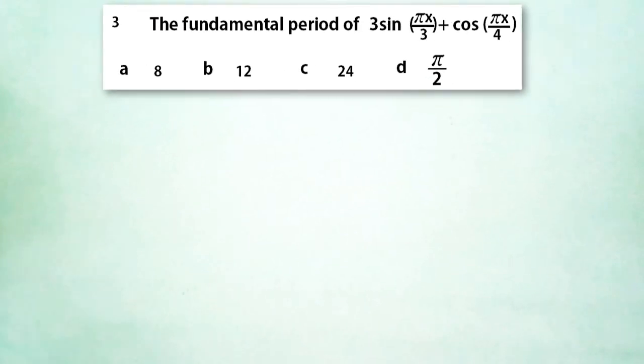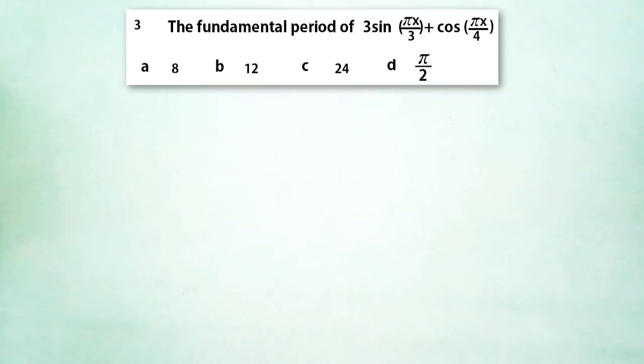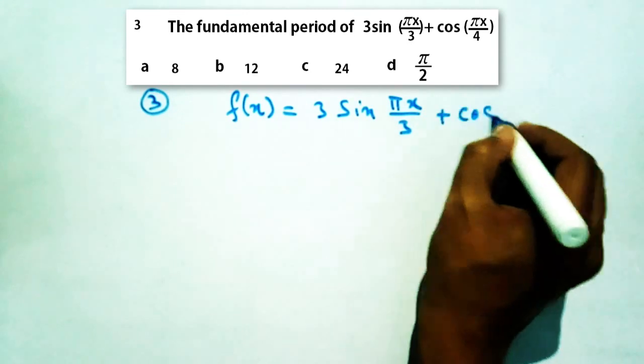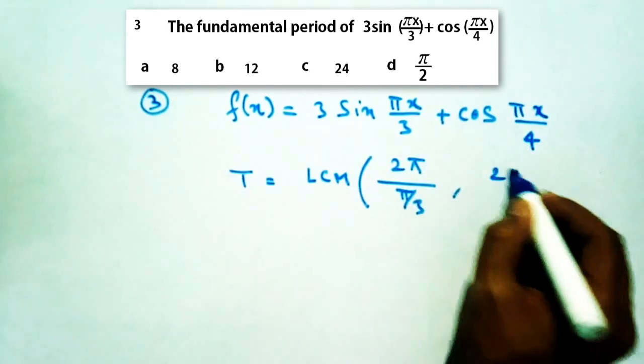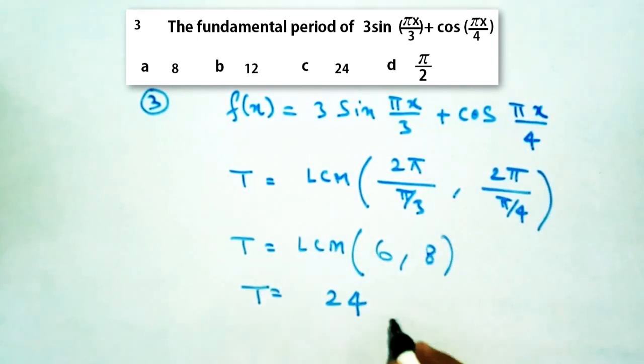In the same way, we can find the period of individual functions and then take the LCM of these two to get the answer. So the period of f(x) will be LCM of 2π/(π/3) and 2π/(π/4), which is the LCM of 6 and 8, and hence option c is the correct answer.